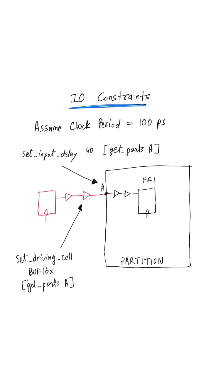In this video let's discuss the IO constraints which are set on input ports in the design. For this discussion let's assume the clock period is 100 picoseconds. The first constraint which is set on input ports is the set input delay.